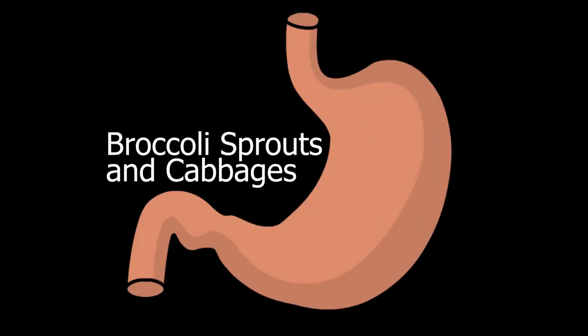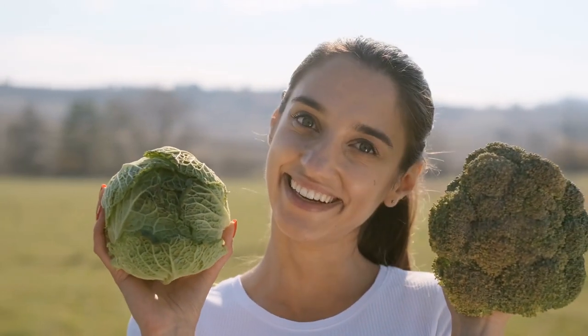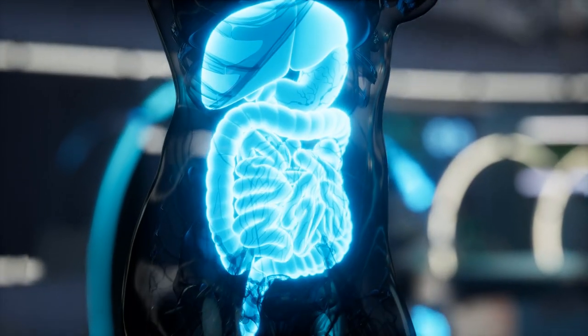Broccoli sprouts and cabbages. Sulforaphane is a strong antioxidant compound found in broccoli and cabbages. It has the ability to suppress the inflammation.